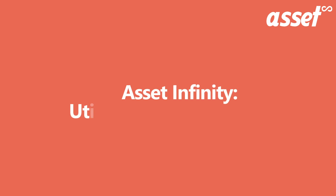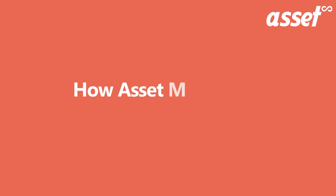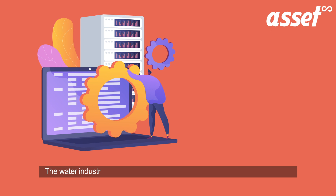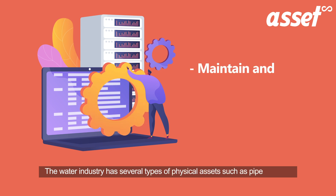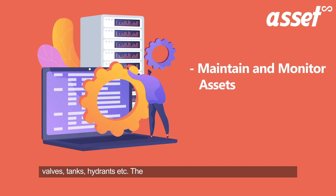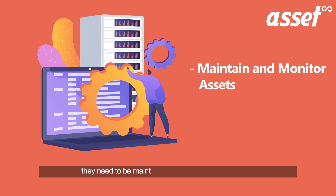In this video, we will learn about Asset Infinity's utility asset management software. Let us understand how asset management software can help the utility sector. The water industry has several types of physical assets such as pipes, pumps, valves, tanks, hydrants, etc. These assets start to deteriorate with time, therefore they need to be maintained and monitored regularly.